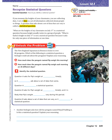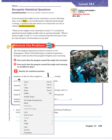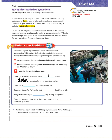We need to identify the statistical question — choose A or B. Question A asks for Pip's weight at one time, so it doesn't ask about a set of data that varies. Question B asks for Pip's weight at 30 different times, and it is likely that Pip's weight will vary. So Question B asks about a set of data that can vary, making it the statistical question.